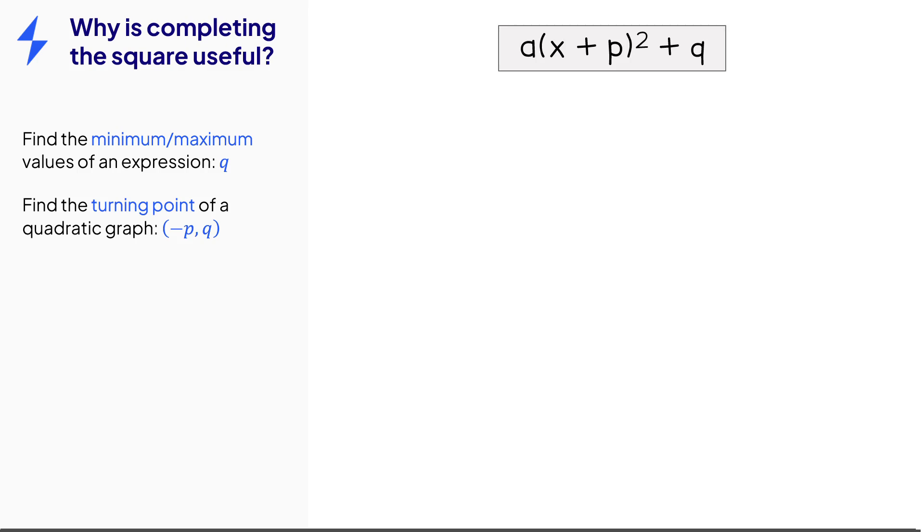Completing the square allows us to find the coordinates of the turning point of the quadratic graph. So if we have a quadratic graph we complete the square and straight away we know that the minimum value of that expression is 4 from what we've just done. So all we need now is to find x coordinate. So the minimum happens when that square bracket is equal to zero. So therefore x needs to equal negative 1. So x is just negative p and the minimum and maximum y value is just q. So we can quickly write down minimums and maximums.